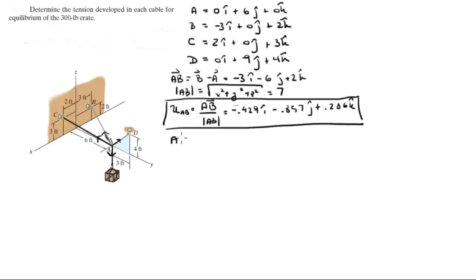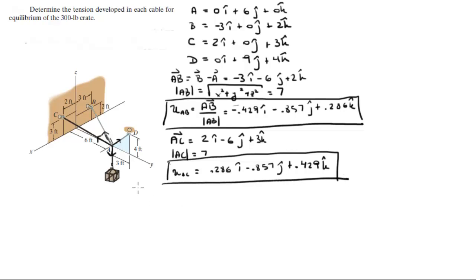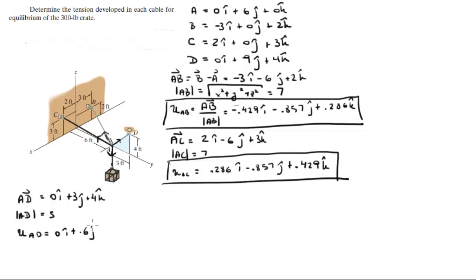The second unit vector is AC: vector AC = (2i − 6j + 3k), magnitude is 7 again, so unit vector AC = (0.286i − 0.857j + 0.429k). For AD: vector AD = (0i + 3j + 4k), magnitude = 5 exactly, so unit vector AD = (0i + 0.6j + 0.8k).